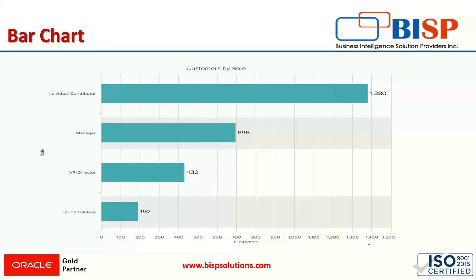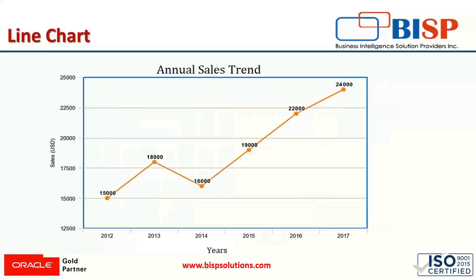The next category is the bar chart. It is similar to the column chart. The only difference is that for the column chart, the data or variables are given in a vertical format, while in bar charts, the information is displayed in a horizontal format. Here we have customers shown on one axis and their roles on the other. Bar charts are also used for comparing and conveying information. The longer the bar, the greater the value.